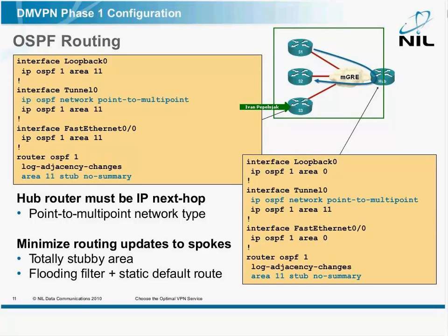There's also another trick you can use. You can use a flooding filter on the hub router, and with the flooding filter, the hub router does not send out any routing updates. So you need a default route on the spoke router that points to the hub.